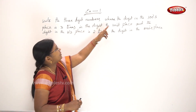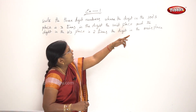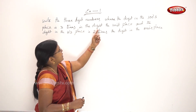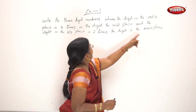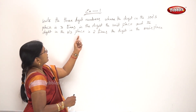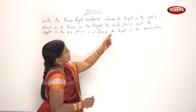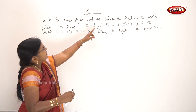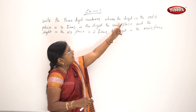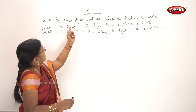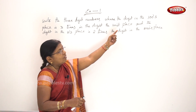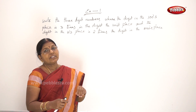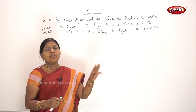Write three-digit numbers where the digit in the hundreds place is three times the digit in the units place, and the digit in the tens place is two times the digit in the units place. The hundreds place is 3 times the units place digit.